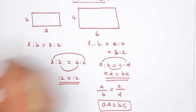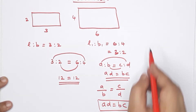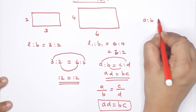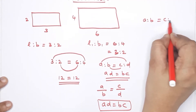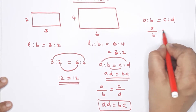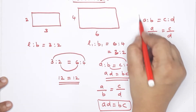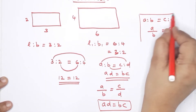Two equal ratios make a proportion. A is to b equals c is to d — that is the proportion. A by b equals c by d — that is the proportion.